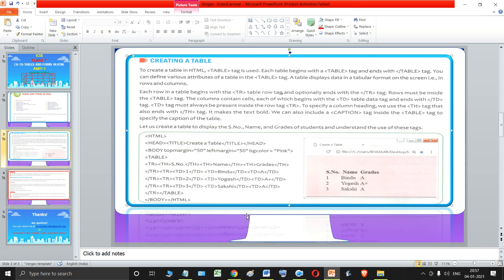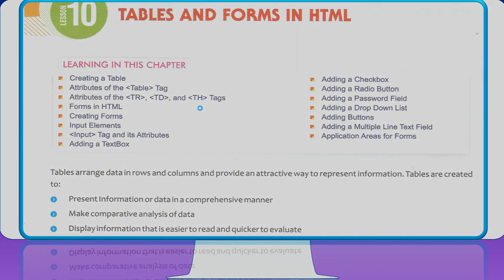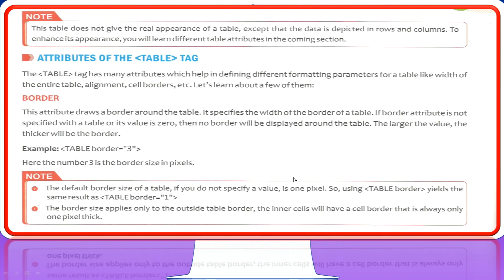One thing to note is that this table does not have any borders — it does not give the real appearance of a table, except that the data is depicted in rows and columns. To enhance its appearance, we will be learning the different attributes of the table tag, such as the border attribute, in the upcoming lecture.